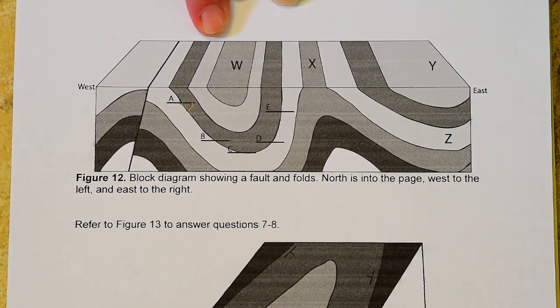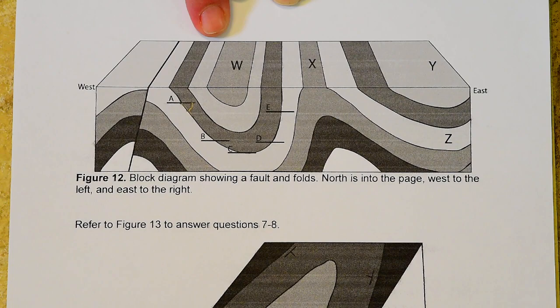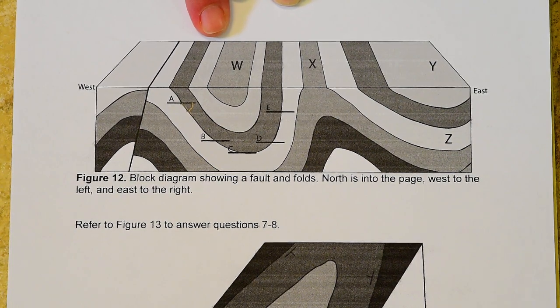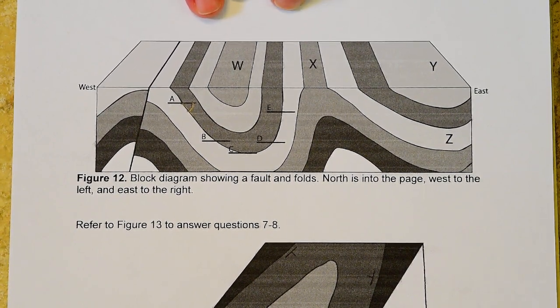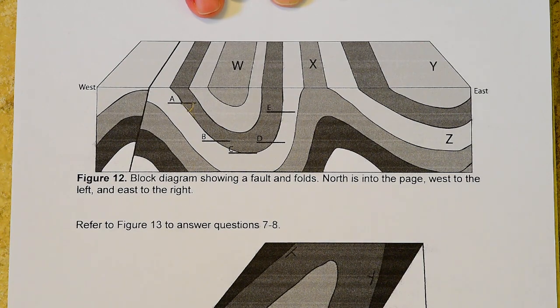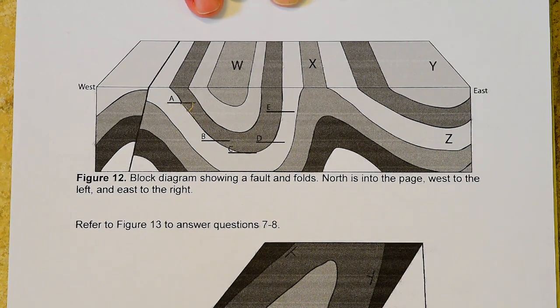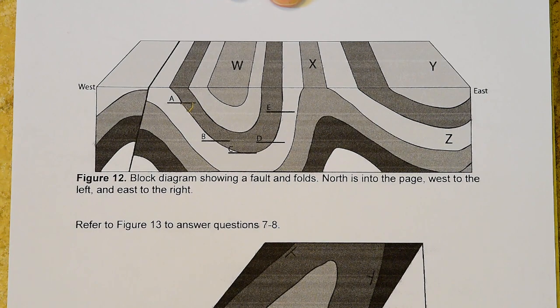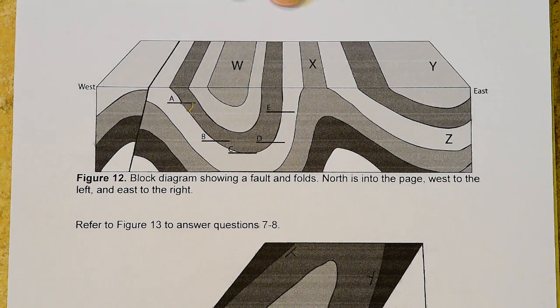Well, you pick one or the other. And then it says upright, inclined, overturned, or recumbent. You have to pick one of those four. And there are examples of that in your structural geology handout, the explanation that I posted on D2L.